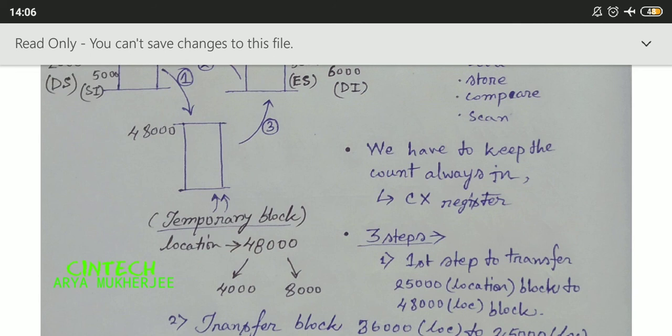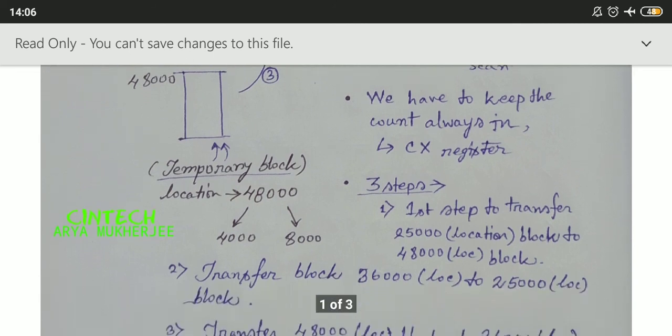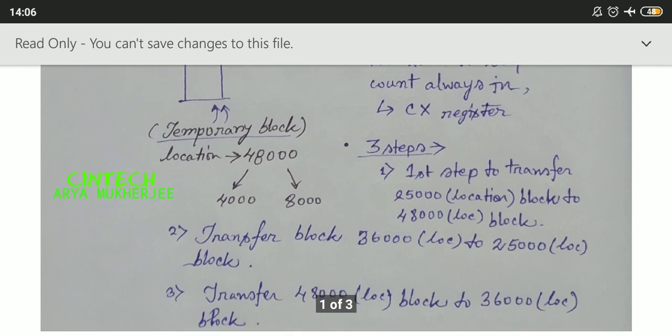We have to follow three steps for this programming. First step: transfer the 25000 block into 48000. Then we have to transfer the 36000 block to 25000. Then transfer the 48000 block of data to the 36000 block.